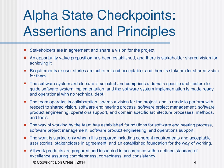As the twig is bent, so grows the tree. To get your project off on the right foot, expectations should be set and evidence should be sought based on the following alpha state checkpoints. Number one, stakeholders are in agreement and share a vision for the project. Number two, an opportunity value proposition has been established and there is stakeholder shared vision for achieving it. Number three, requirements or user stories are coherent and acceptable, and there is stakeholder shared vision for them.